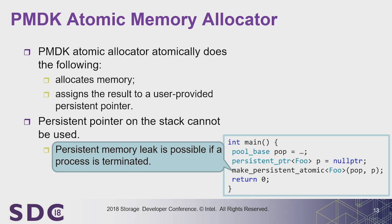An important point: since we have no transactions, we cannot use the atomic allocator and assign results to a pointer that resides on the stack. If a crash happens immediately after the allocator completes, since the pointer is on the stack, we will lose it — on restart, we will have a persistent memory leak. The important outcome is that when using atomic allocators, we cannot assign results to a pointer on the stack. Instead, we make the new node pointer part of the data structure itself, to ensure its address is available in the restore function on restart.